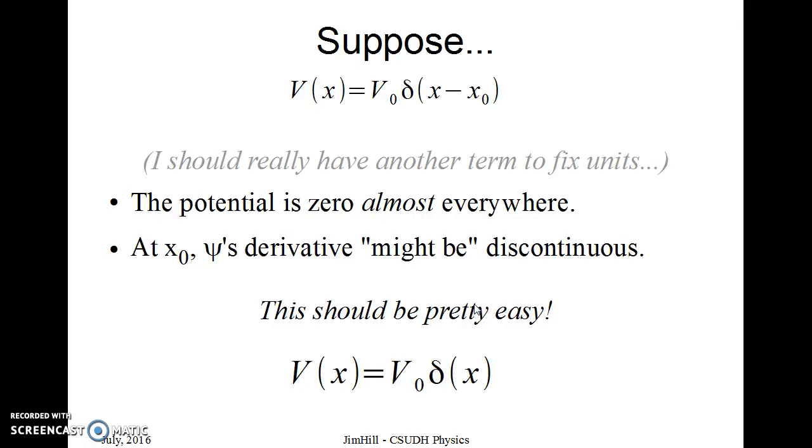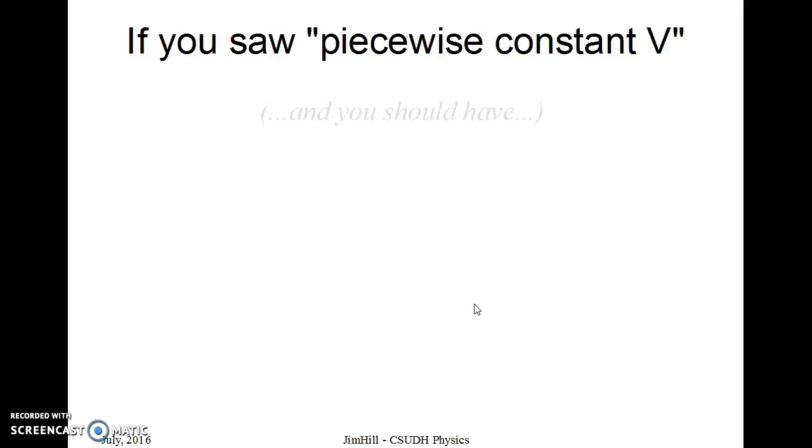and I'm going to work with the case where x zero is zero. This is just a potential that is some multiplier times a delta function of x in one dimension.